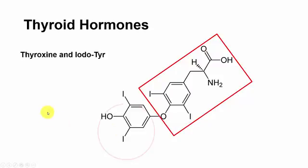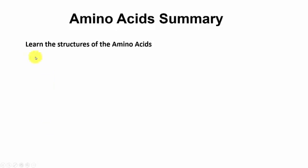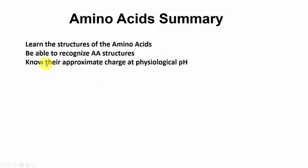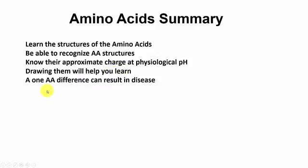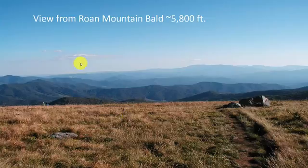Thyroxine involves a tyrosine with an extra tyrosine ring added, and those tyrosine rings are iodinated — this is tetraiodothyronine (T4). For the amino acid summary: learn the structures, be able to recognize them, know their approximate charge at physiological pH. Drawing them out as you try to learn them will help a lot. A single amino acid difference can result in disease, and post-translational modifications change structure and function.